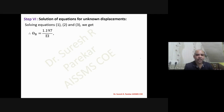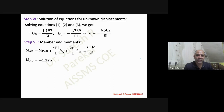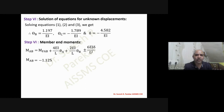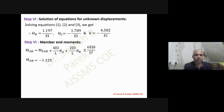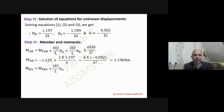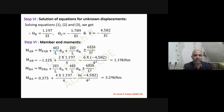The solution is: θB = 1.197/EI, θC = minus 1.789/EI, Δ = minus 4.5/EI. Substituting into slope deflection equations: since θA = 0 (fixed support), M_AB has only two terms, giving M_AB = 1.19 kN·m. M_BA = 3.29 kN·m.